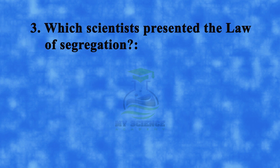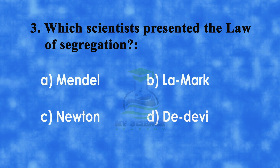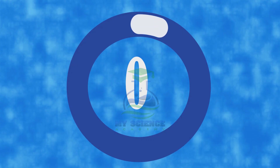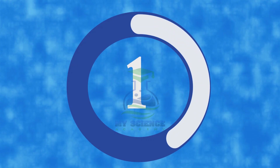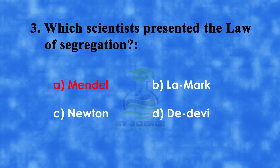Question 3: Which scientist presented the law of segregation? A. Mendel, B. Lamarck, C. Newton, or D. Dewey. Correct answer is A. Mendel.